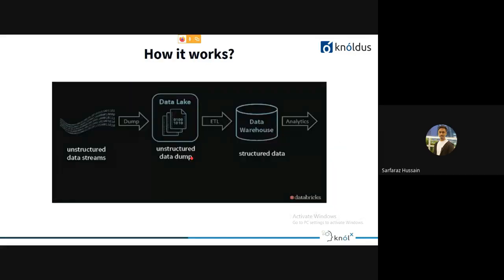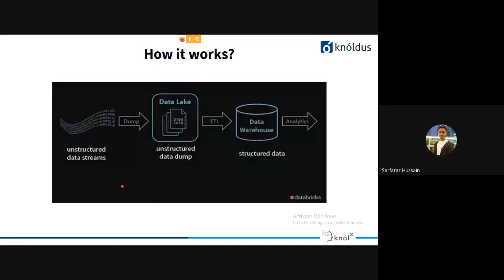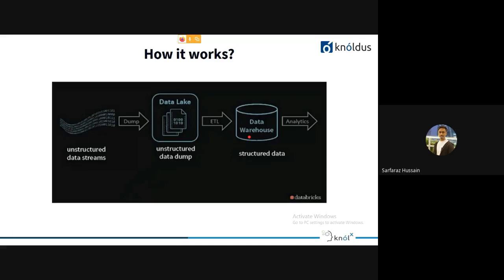Now let's look at how these things actually work in practice. Data comes from different sources and gets dumped into a data lake — your S3, Azure Blob — from where we extract, transform, and load it into the data warehouse. From the data warehouse, we can attach BI reporting tools or processing tools like Spark. Unstructured data lands in the lake; ETL structures it, since the data warehouse supports only structured data.